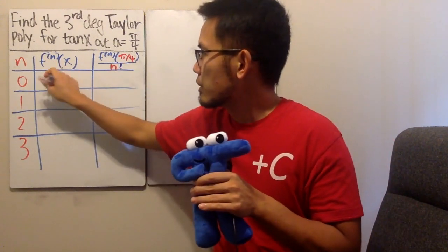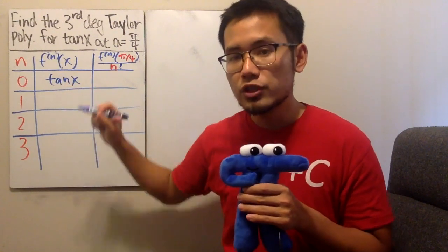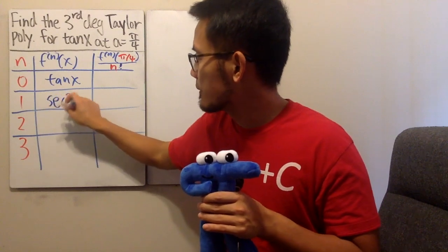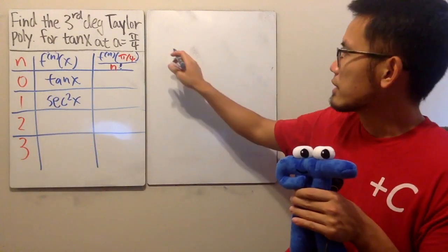The first thing is just the original, which is just tangent x, and differentiating tangent x, we get secant square x. That's great. To go from here to here, I'll show you guys the work on the side.